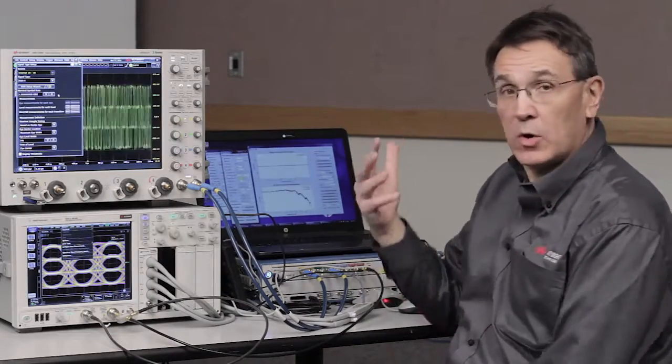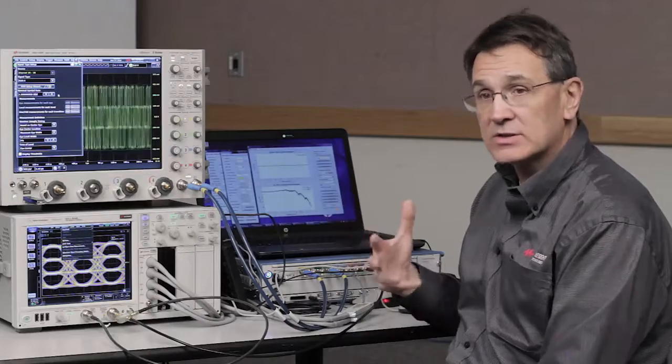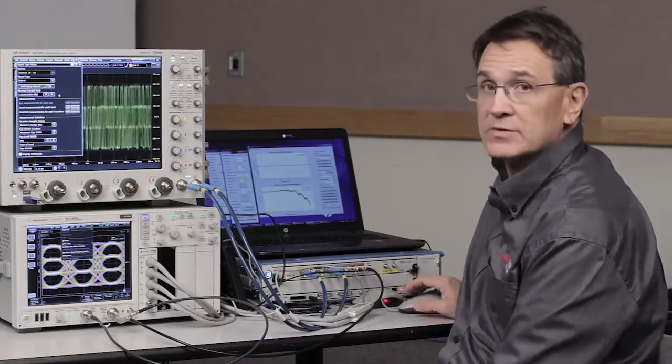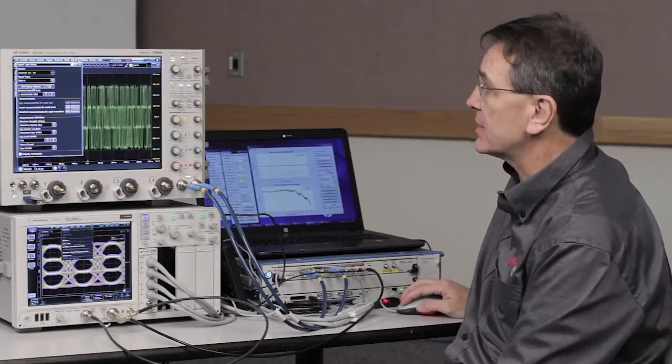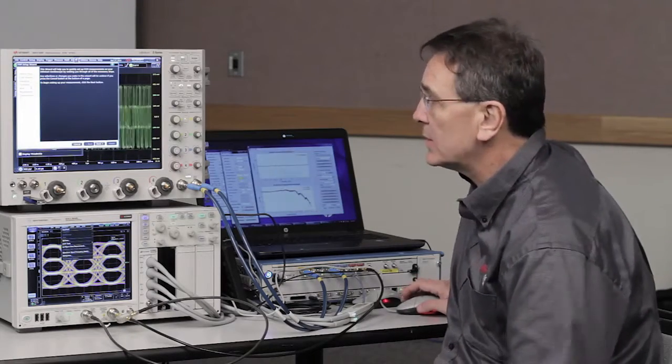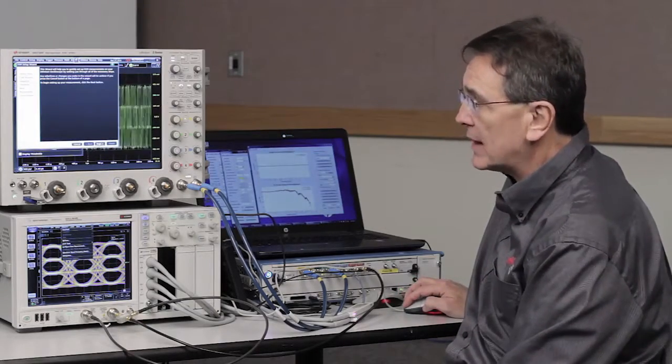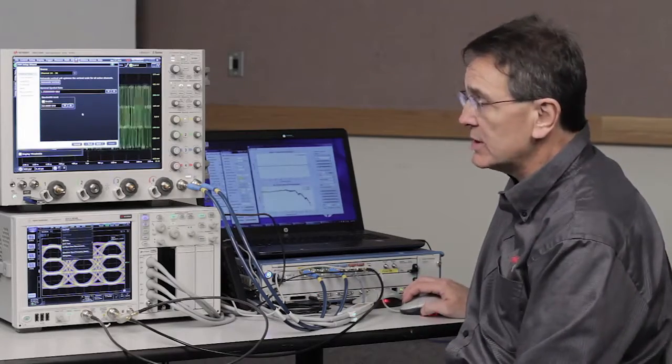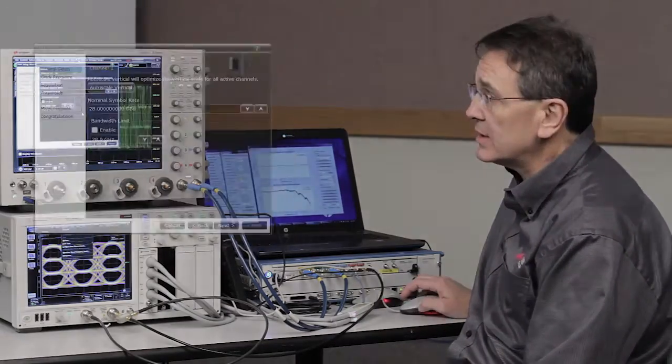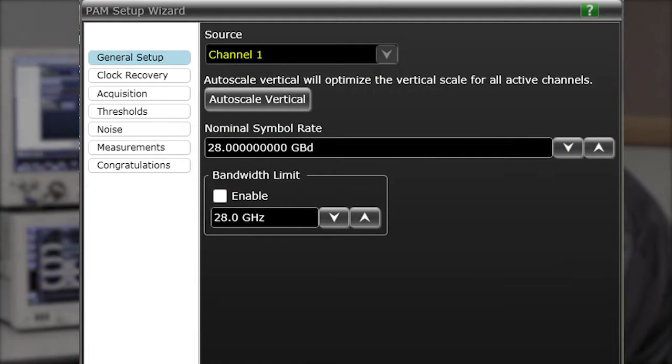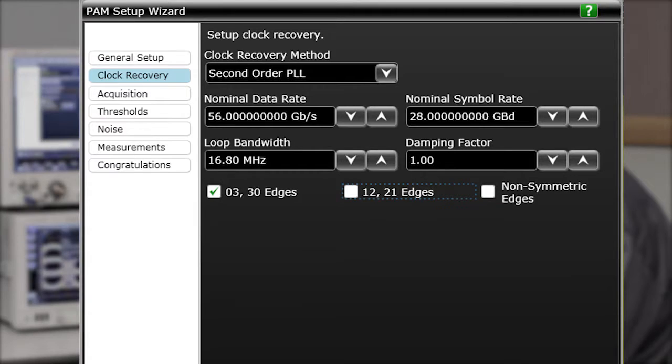And once we do that, we bring up a whole dialogue that allows us to go through and specify the parameters of the PAM-4 signal that we're measuring. So we've got a PAM-4 signal setup window, or wizard, that we can run through that'll ask us a couple of basic questions. The first one, being the most important question, is what speed are we running at? So we'll go ahead and enter in the speed, which in this case happens to be 28 gigabaud or gigasymbols per second. We'll go on to the next one and then we can see that this is a 28 gigabaud signal operating at 56 gigabits per second.